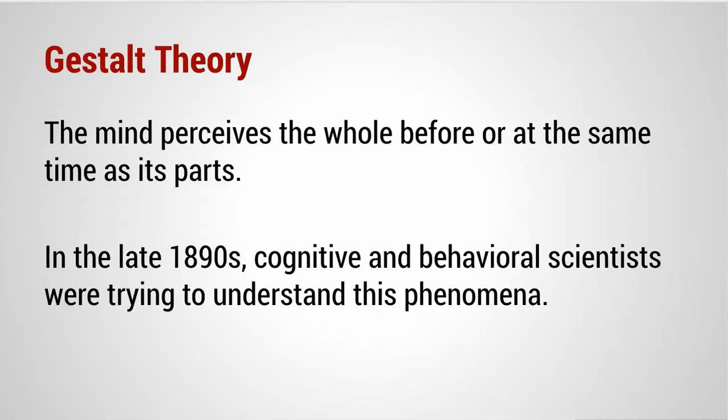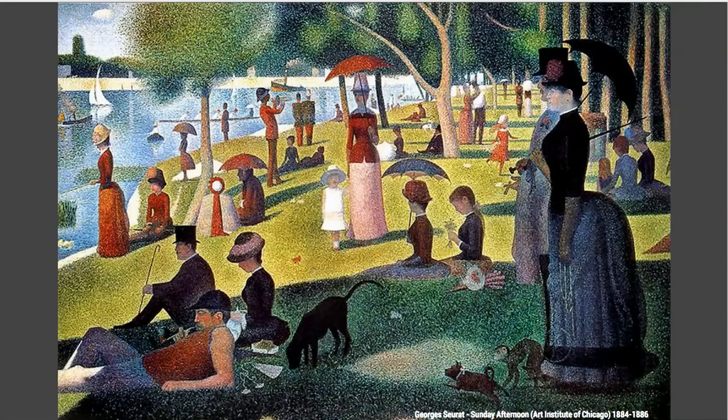Gestalt theorists were trying to explain this phenomenon. A good example to understand what Gestalt theory is really doing is Sunday Afternoon by Georges Seurat. This is a very famous painting in the style of pointillism — it's actually at the Art Institute of Chicago. Many of you have probably seen it in Ferris Bueller's Day Off, where Cameron stares at this painting. It's a really interesting scene.